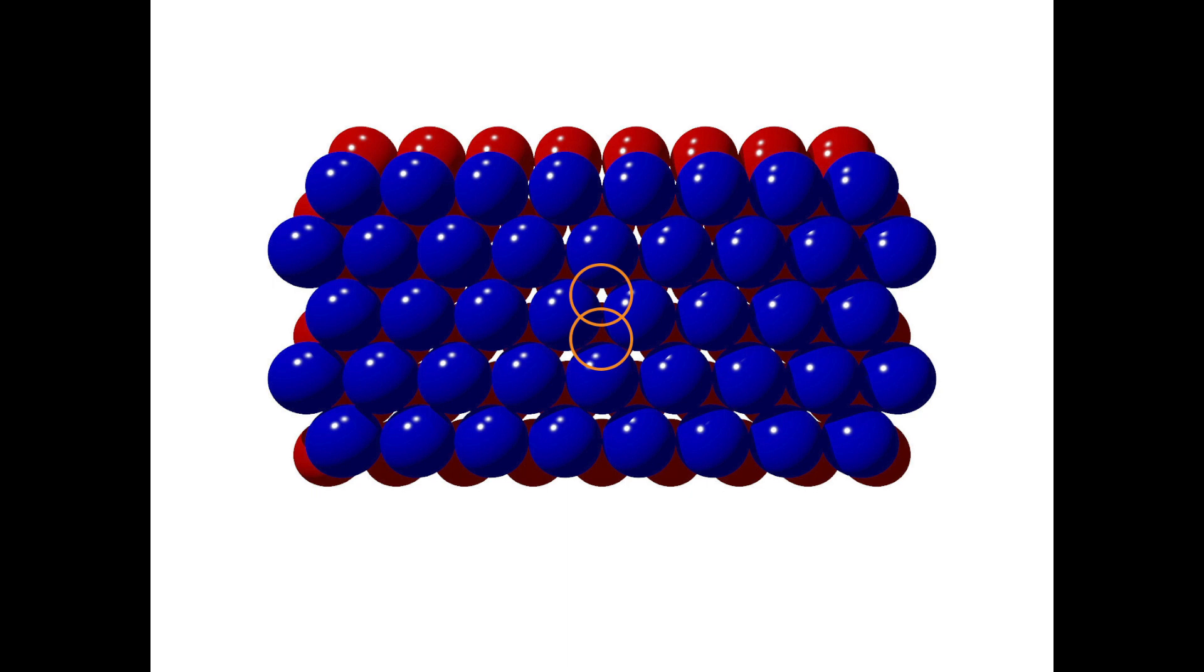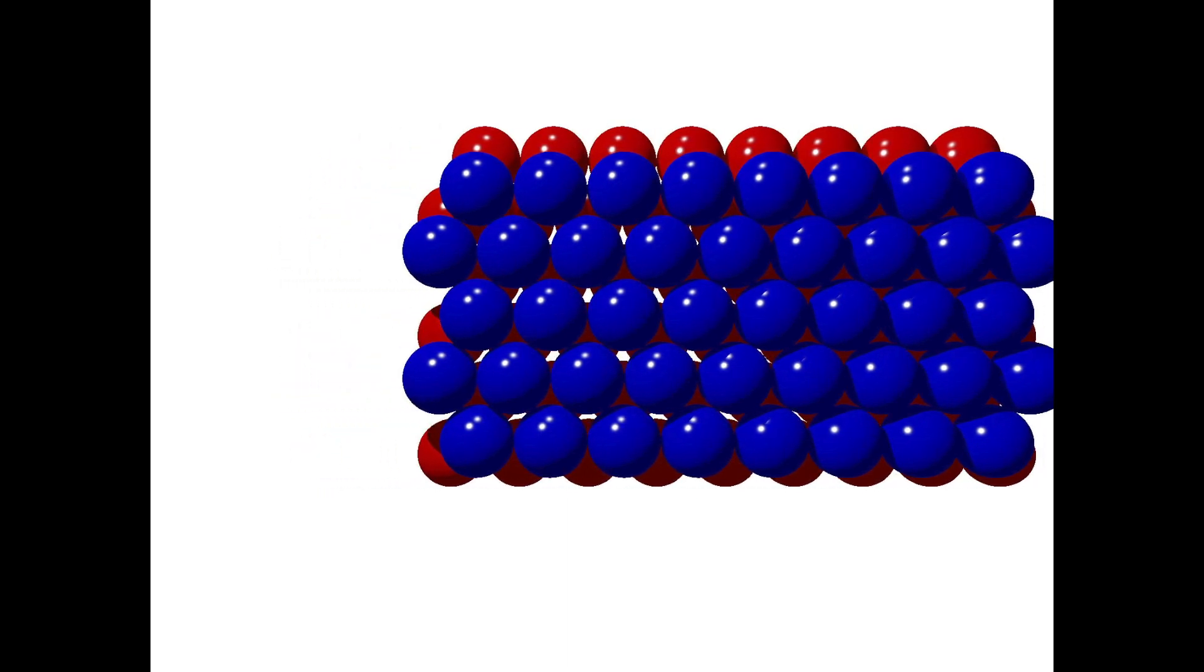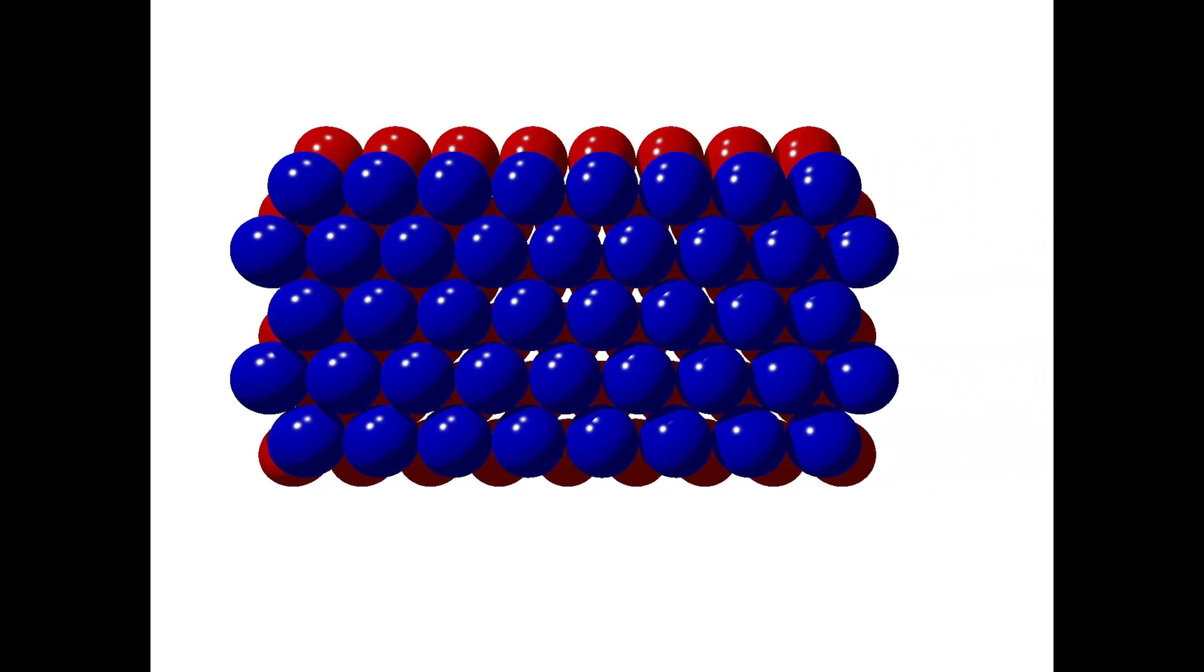You can look right through the triangular holes in the red layer underneath. Through some of the triangular holes, you can see a red sphere sitting directly underneath. Let's shift the structure around just so we can have a look at this.